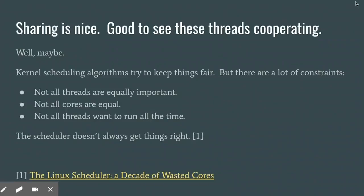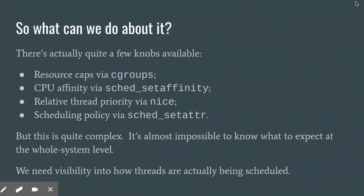So the scheduler's default behavior isn't always what we want. What can we do about it? Actually quite a lot. C groups provide ways to cap resource usage and restrict groups of threads to particular cores. We can also pin threads to particular cores with set affinity. We can set relative thread priorities with nice, and change scheduling policies with set adder. But this is a lot of really complex stuff, done at the thread or thread group level, and understanding how it all comes together in a real system is really difficult. To make the most of these tools, we really need visibility into exactly how scheduling is happening.